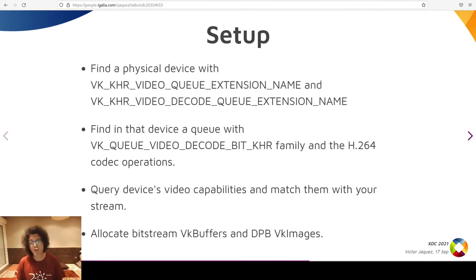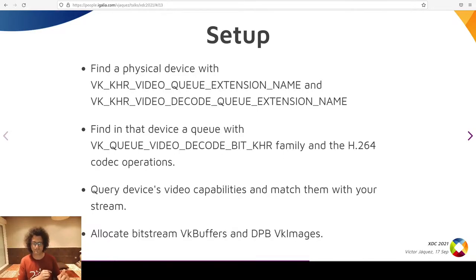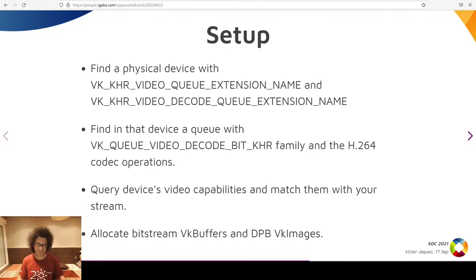When writing a video decoding application, the common initial steps are the following. First, find a Vulkan physical device with the video queue extension and the video decode queue extension. If there aren't any, the application should halt. With the found device, the application must look for a queue with a family type of video decode bit and the H.264 codec operation. If none are found, the application should halt because it cannot process that codec. If available, we instantiate that queue.